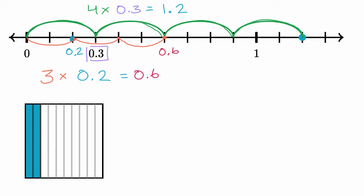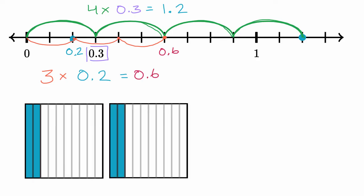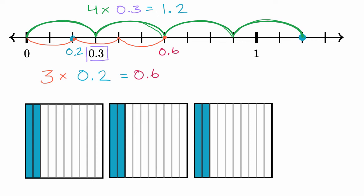So if you have 3 times 2 tenths, well this is 1 times 2 tenths, this is 2 times 2 tenths, and this is 3 times 2 tenths. And so how many tenths do we now have? Well we have 1, 2, 3, 4, 5, 6 tenths, which is exactly what we have here, 6 tenths.